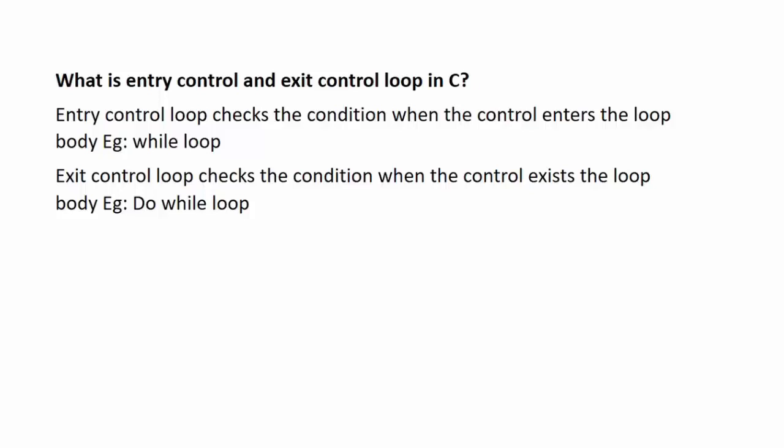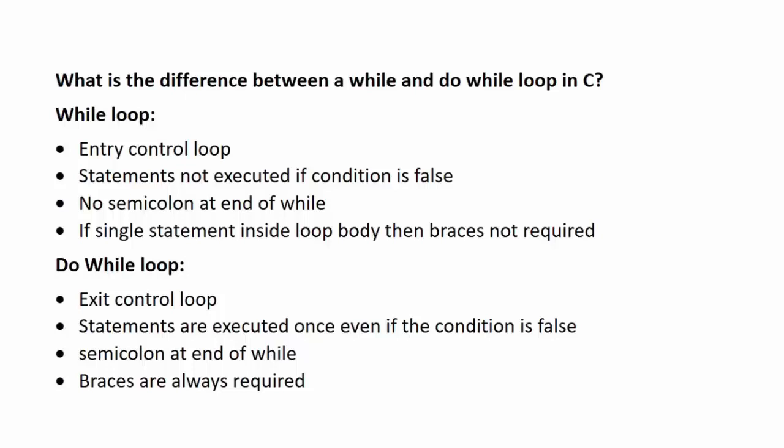Next we have exit control loop. Exit control loop checks the condition when the control exits the loop body. Example: do-while loop. The do-while loop is used to first execute a block of statements and then check whether the condition is true or not. The statements are executed, and at the time the control exits the loop body, it is checked whether the condition is true or false.